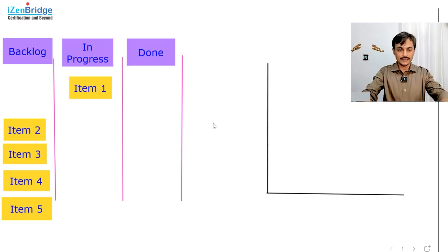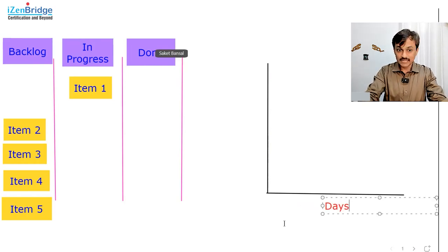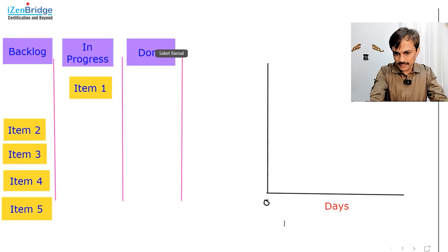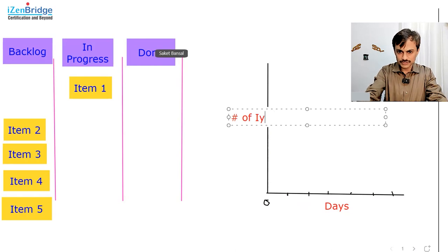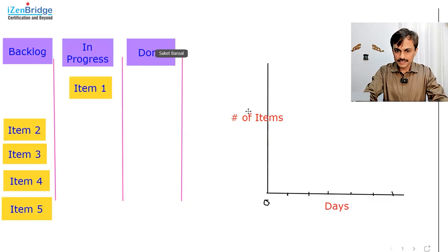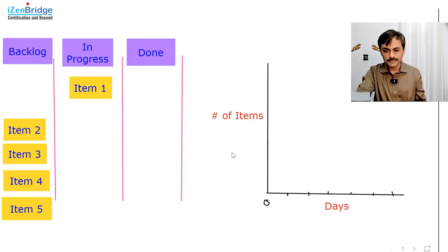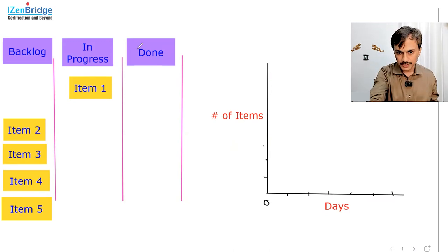Now how do we depict this in a cumulative flow diagram, just at day zero and day one? In a cumulative flow diagram, the x-axis represents days — a timeline starting from zero through day one, day two, day three. The y-axis is the number of work items on your board. It's an area graph that helps us know where we are for a particular area of work. As of now I have five items total, so five is the top number on the y-axis — one, two, three, four, five.